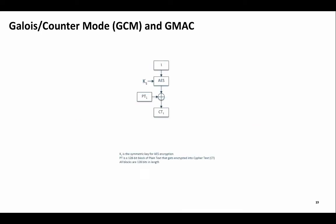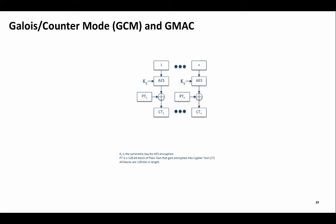As we saw in a previous video, a common method of encrypting data is to XOR the plain text with a pseudorandom string. For counter mode algorithms, the pseudorandom string is created by encrypting the output of a counter, hence the name. The first block value is 1; AES is the encryption algorithm using the symmetric key KS. The output of the encrypted counter is XORed with the block of plain text, and the output of the XOR operation is the cipher text. This process is continued for all N blocks of plain text, with the N blocks of cipher text being the output we are looking for.